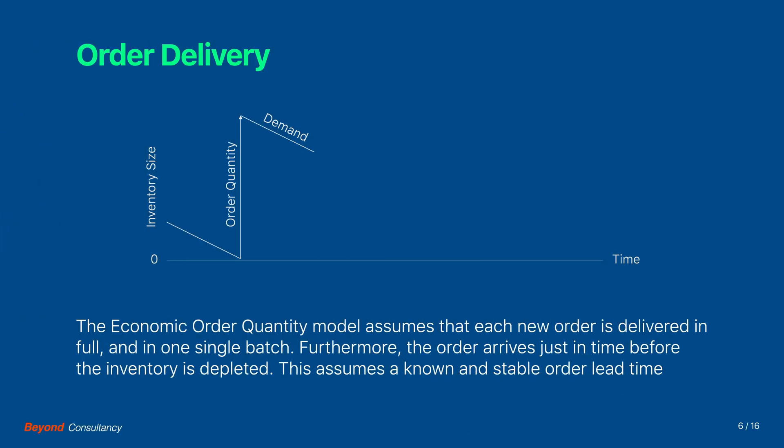Let's investigate some of the key operational details. The economic order quantity model assumes that each new order is delivered in full and in one single batch. Furthermore, the order arrives just in time before the inventory is depleted. This assumes a known and stable order lead time.